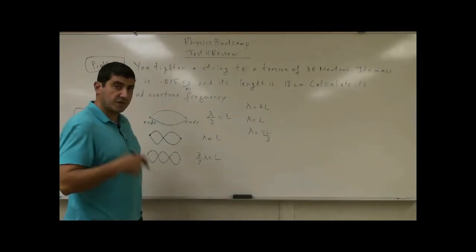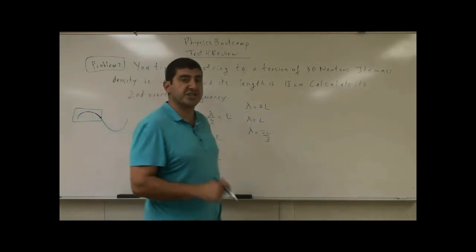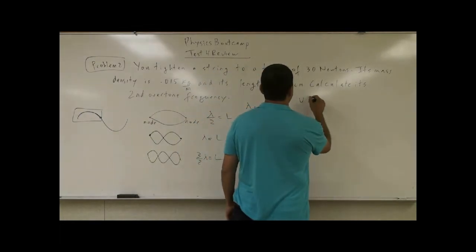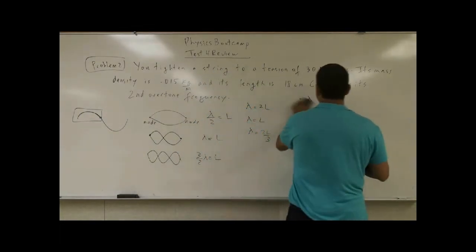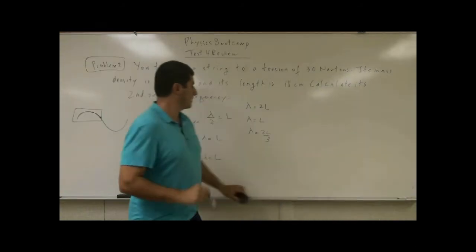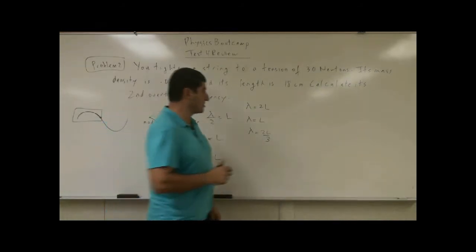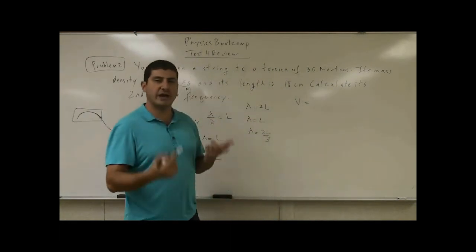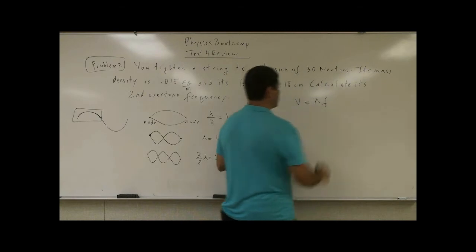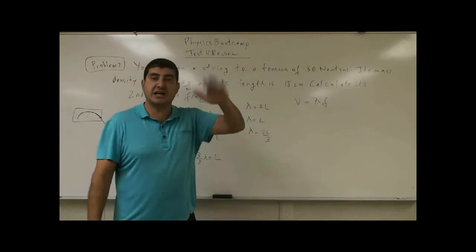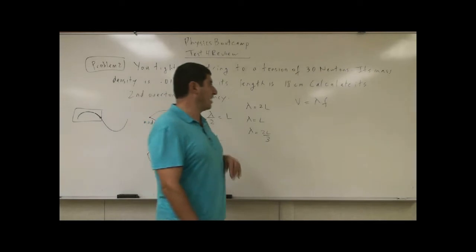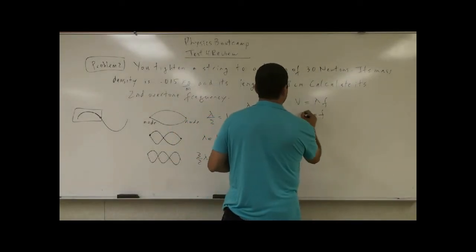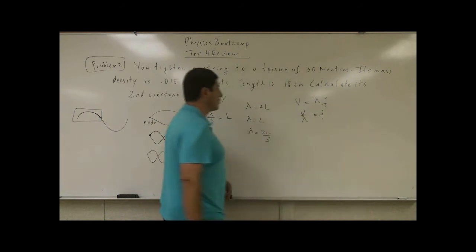Now, if we want to express this in terms of frequencies, we say the velocity of any wave is equal to its wavelength times its frequency. The frequency is how many cycles per second the wave is going up and down. So the frequency is equal to the velocity over its corresponding wavelength.